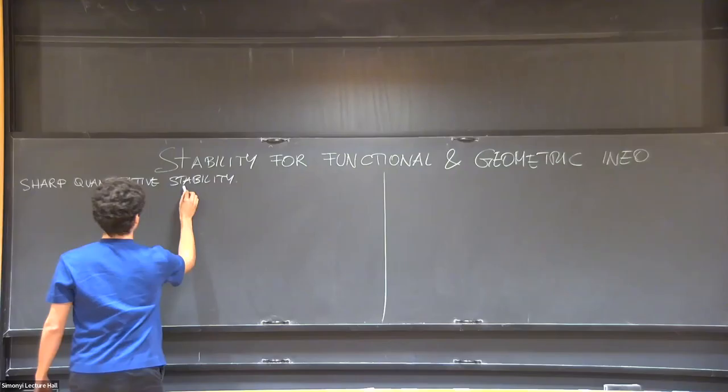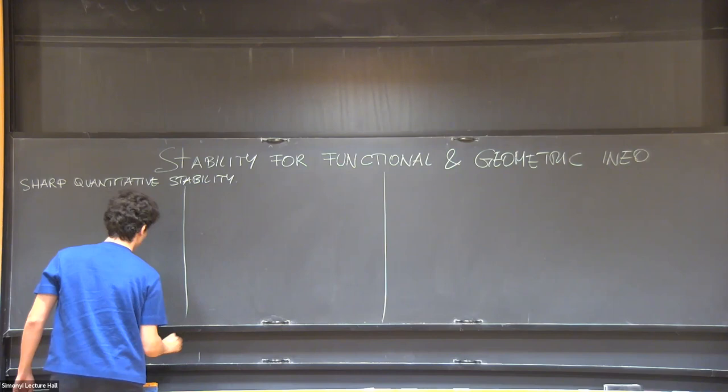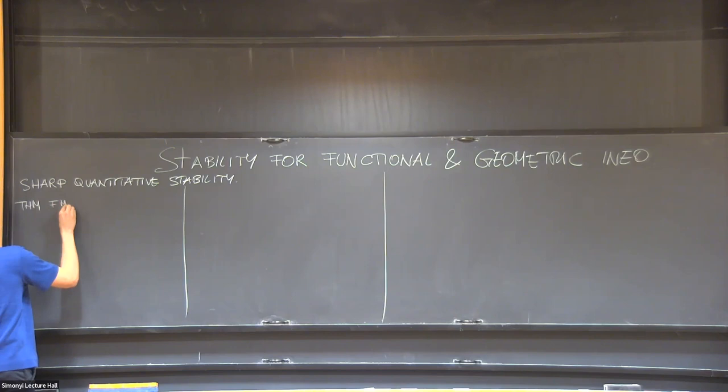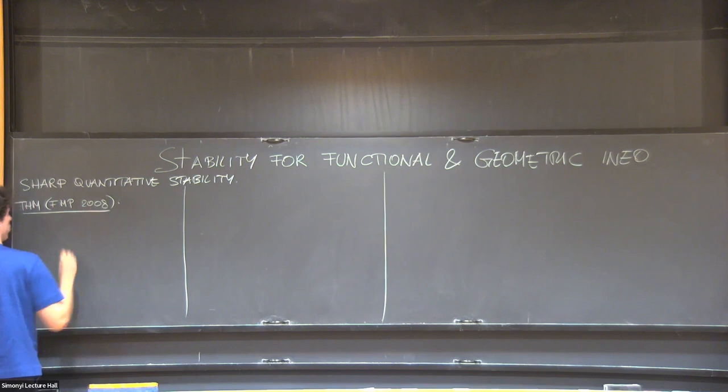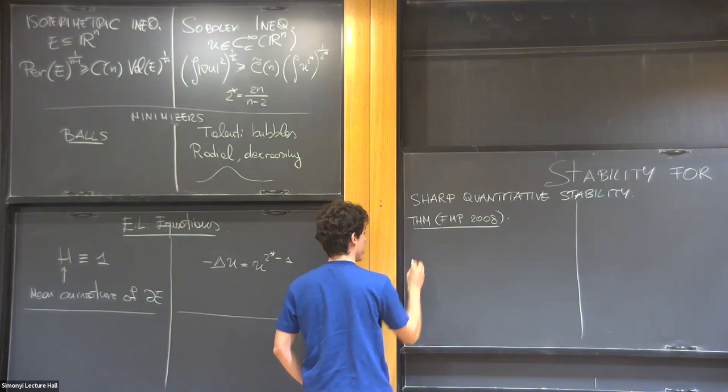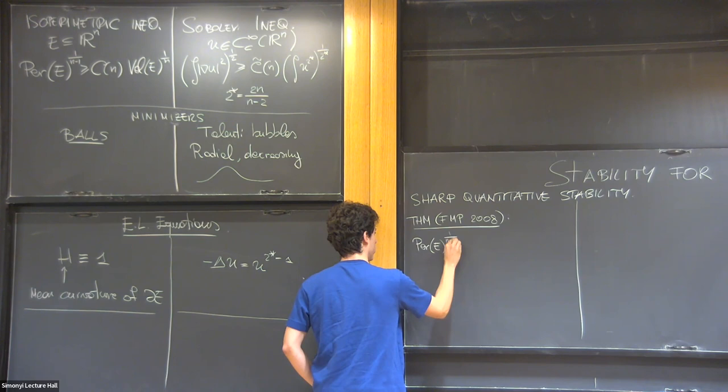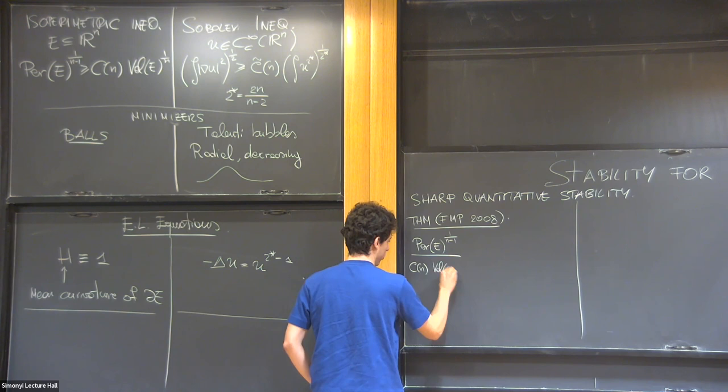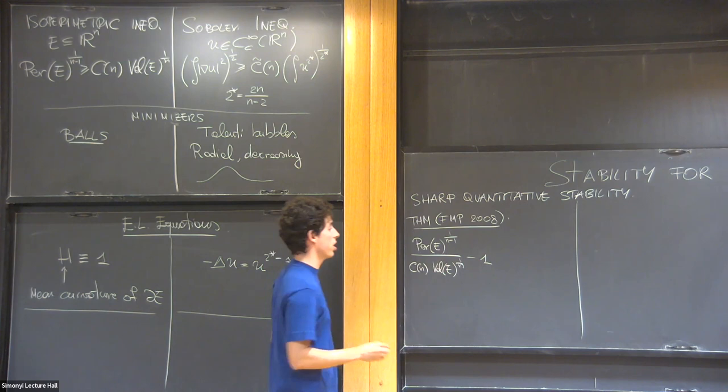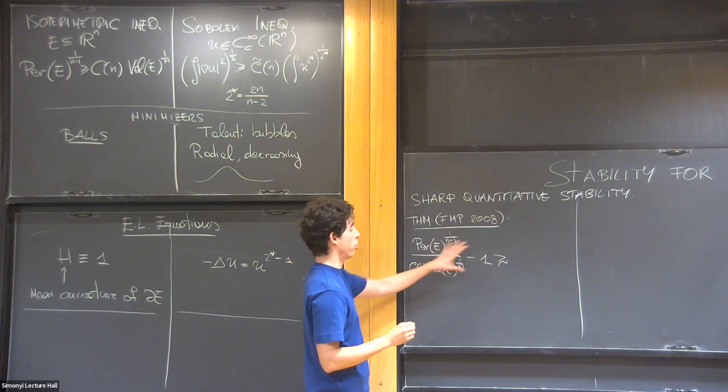So instead of giving examples, I think it's best to instead of explaining what sharp and quantitative mean in general, I give the two examples in these two cases. So I'll start with this statement and then I'll discuss them. So this is a celebrated theorem by Fusco Maggi and Pratelli in 2008.